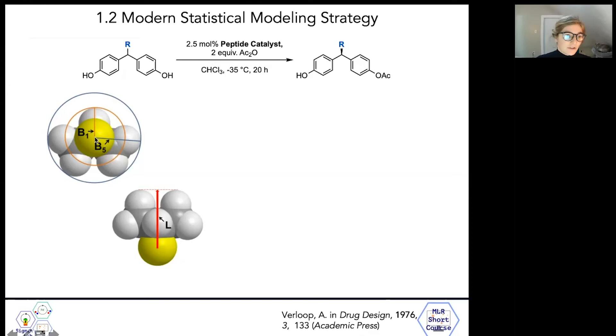B5, which similarly describes the maximum width of a substituent with respect to that same bond axis. And L, a length parameter which describes the total or maximum length of a substituent, once again, with respect to that primary bond axis.